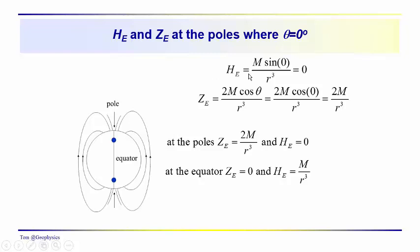If we go to the poles, the horizontal component becomes 0 because the sine of 0 equals 0. At the poles, the magnetic field of the Earth is entirely vertical — there is no horizontal component. At the equator, the Earth's main magnetic field is all horizontal — there is no vertical component. At the pole: Z sub e equals 2M over R cubed, and H sub e equals 0. At the equator: Z sub e equals 0, and H sub e equals M over R cubed.